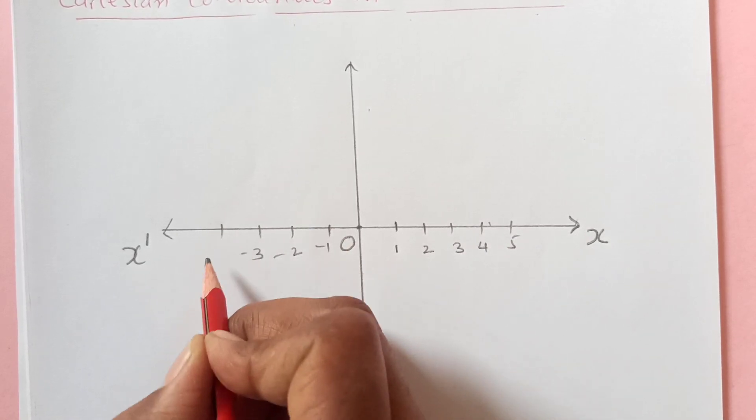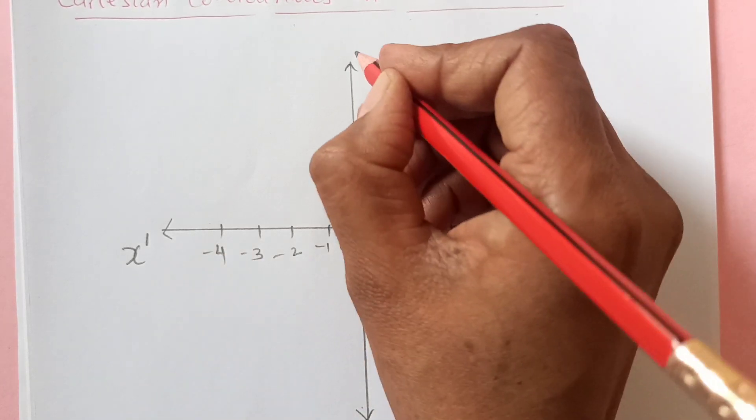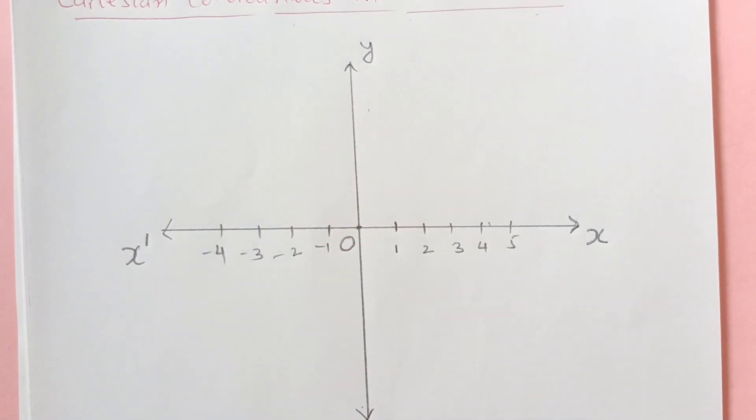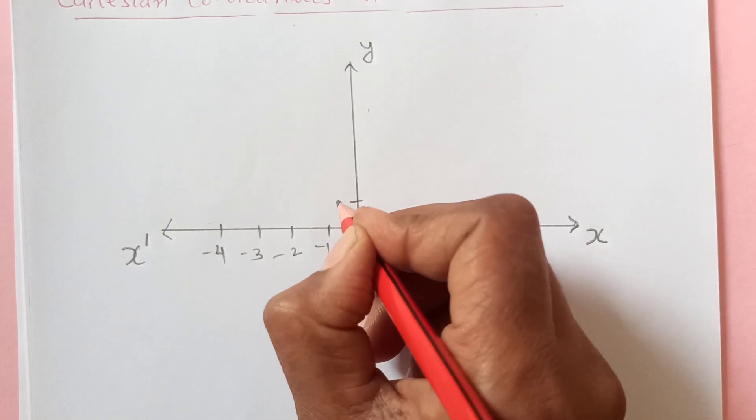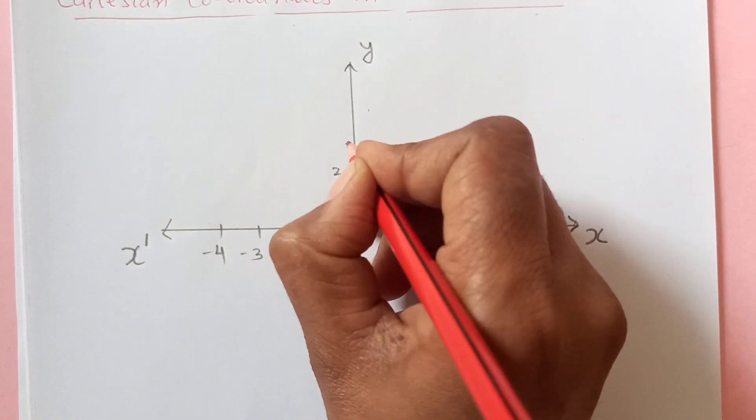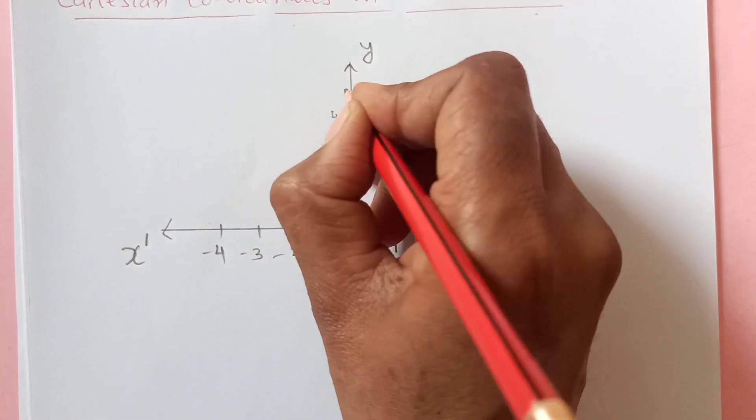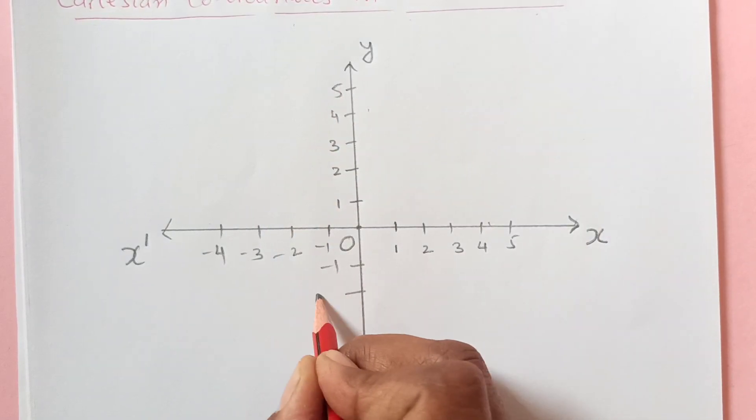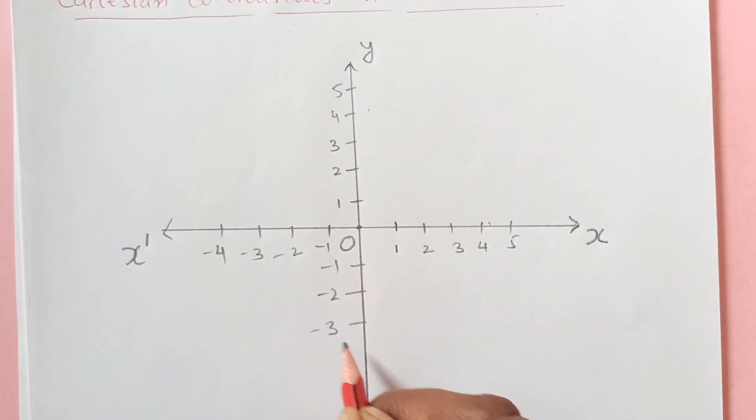And the other side, this is positive y axis, this is negative y axis. Again we will have positive values of y over here and this side we will have negative values.